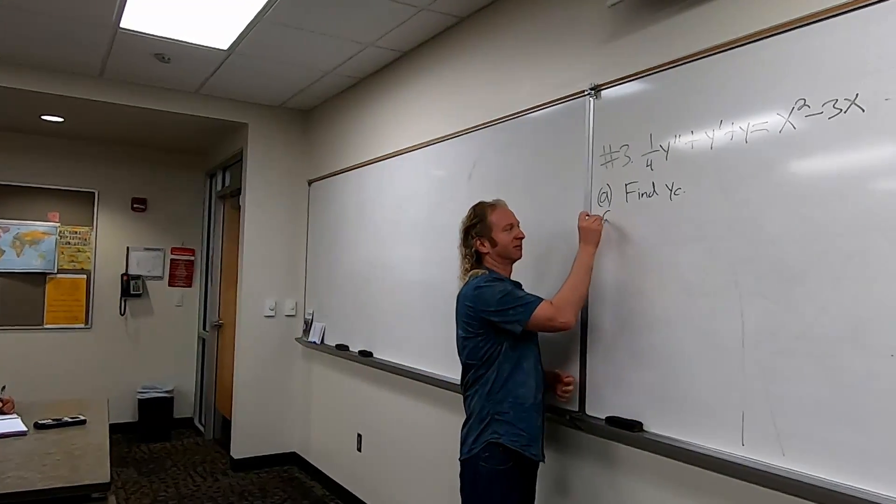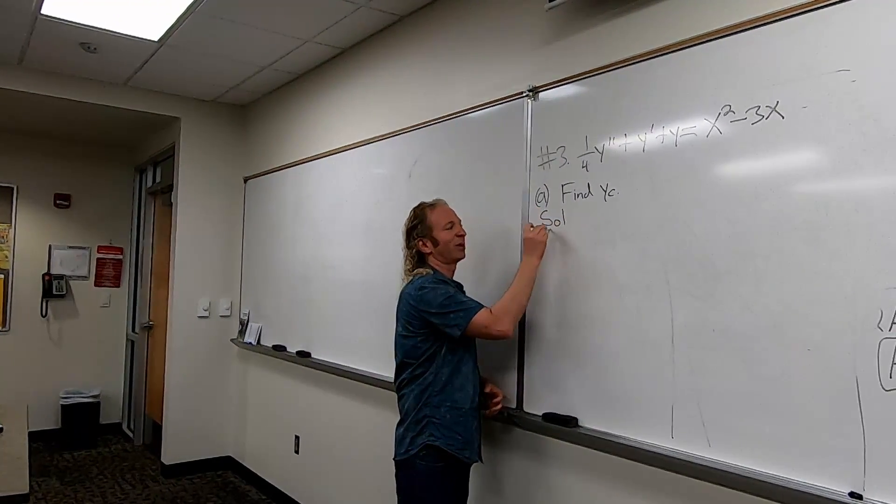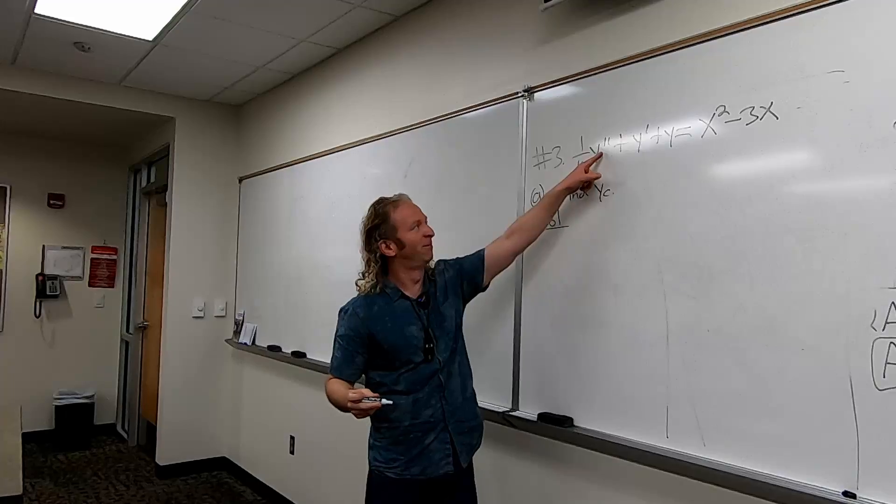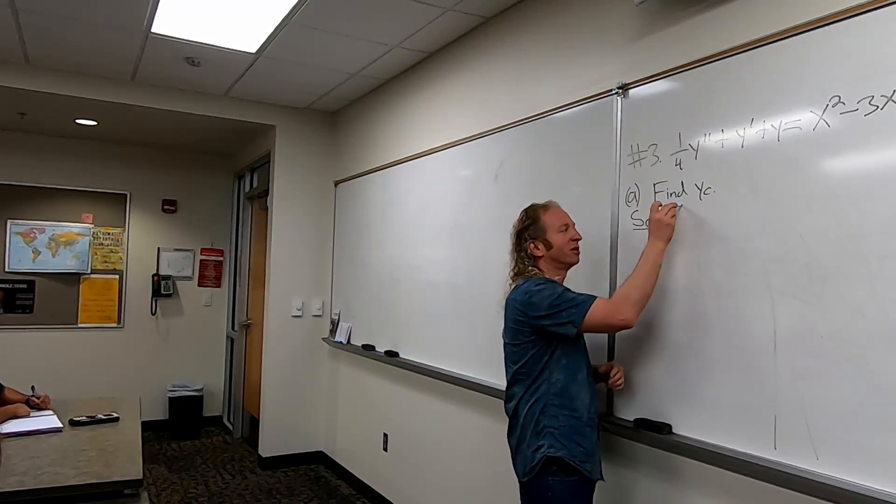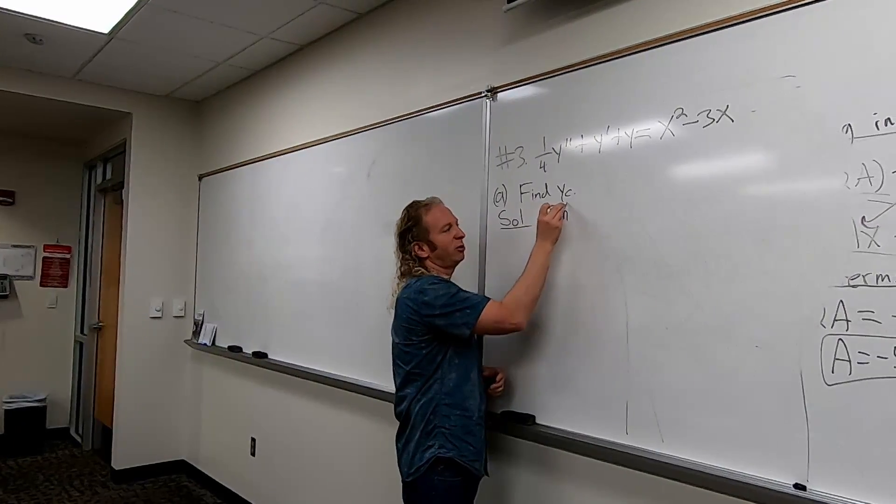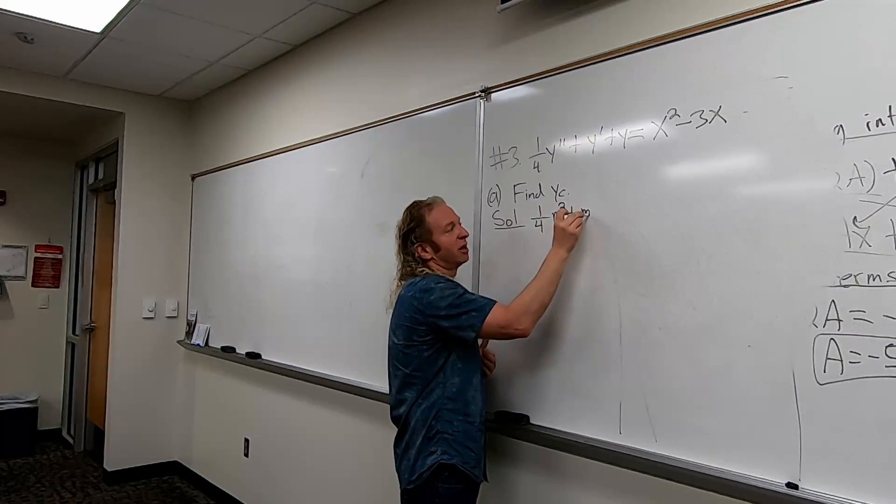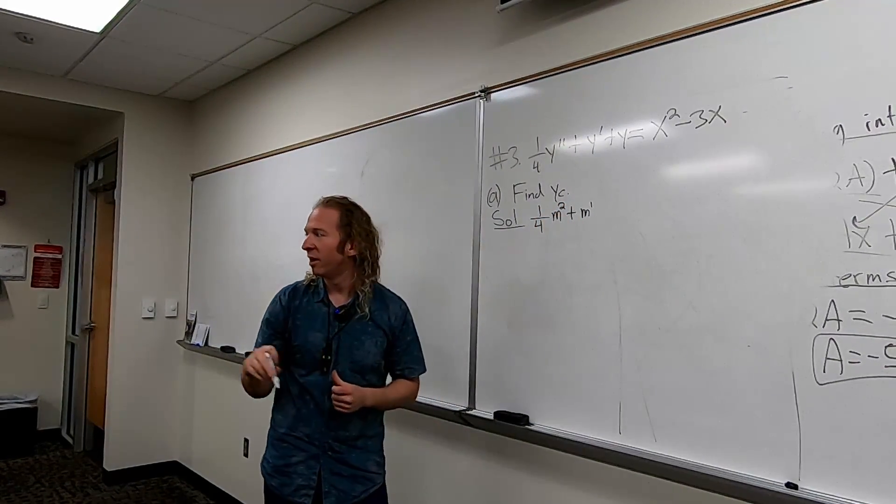So, solution. I thought I should write in cursive or something. So we'll start by finding the characteristic or auxiliary equation. So one-fourth M squared. We do use some cursive in this class. When we get to Laplace transforms, I use cursive.